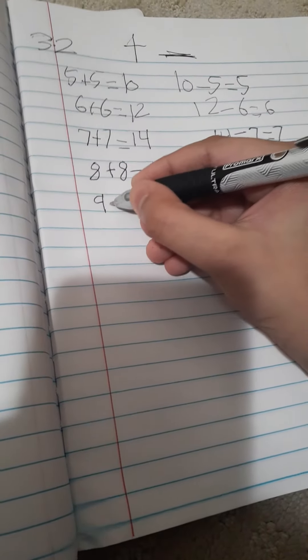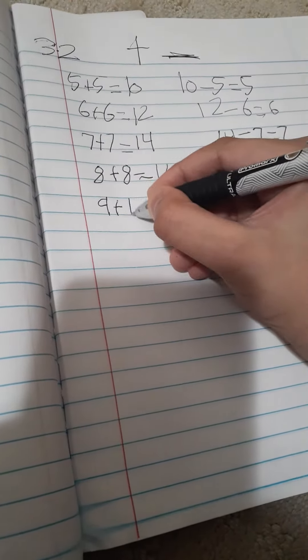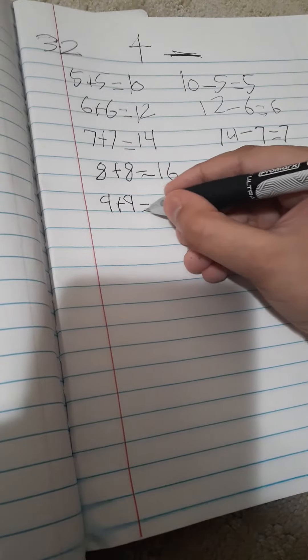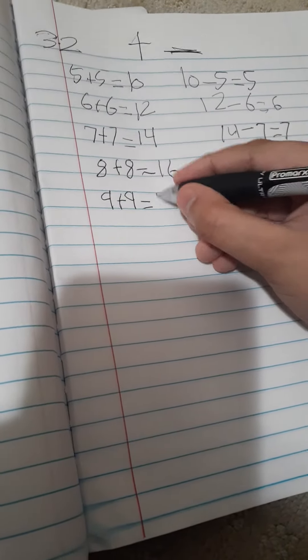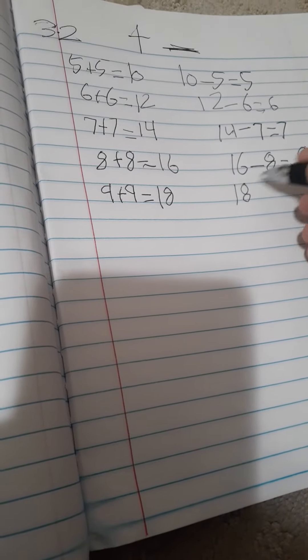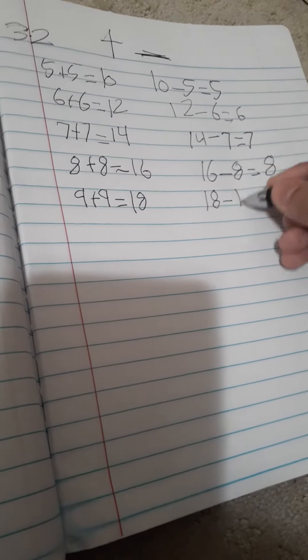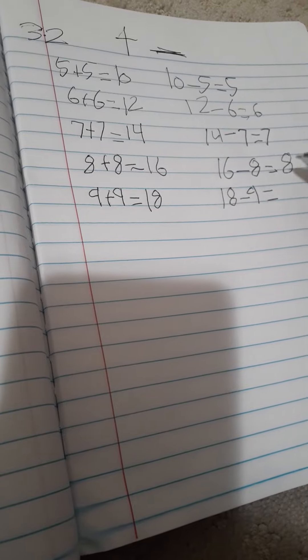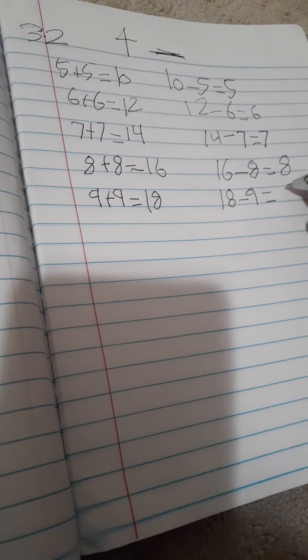9 plus 9 equals 18. Then 18 minus 9 equals 9. All right guys.